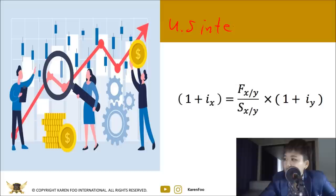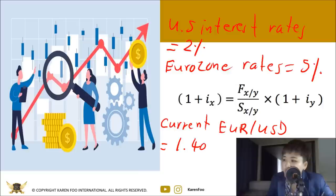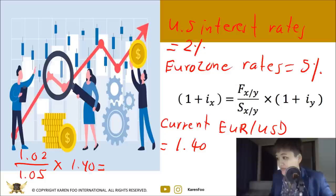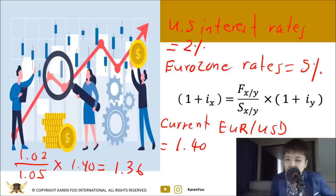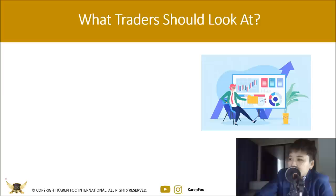For the Interest Rate Parity formula — used in Forex Forward Agreements — if US interest rates are 2% and Eurozone rates are 5%, and the current EUR/USD rate is 1.4, you calculate: (1.02 / 1.05) × 1.4 = approximately 1.36. This is a model for math-oriented traders, but in the real world many more factors come into play beyond just applying a formula. Higher interest rates are bad for borrowers and homeowners but good for savers, bond investors, and carry traders. As a carry trader, you profit from the interest rate differential between a high-yield and low-yield currency.